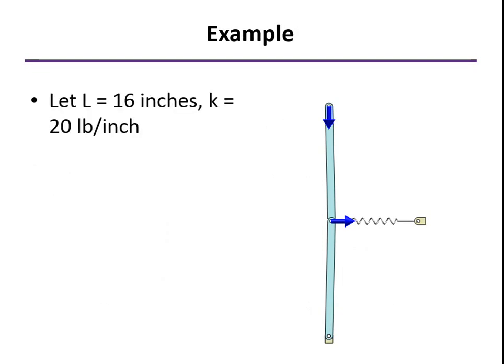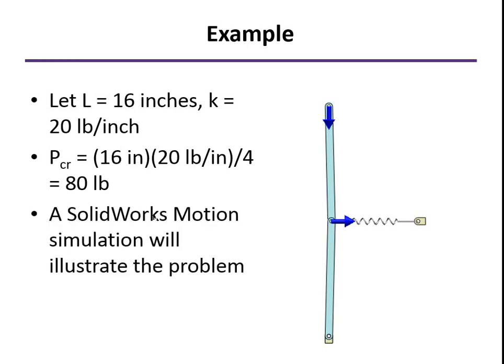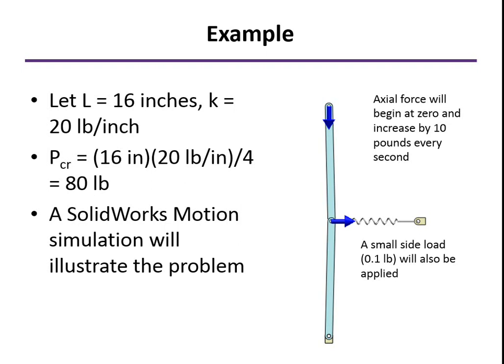Now, let's put some numbers on this. We'll let L equals 16 inches and K equals 20 pounds per inch for the spring constant. Quick calculation gives us P critical of 80 pounds. Now, we're going to do a SOLIDWORKS motion simulation to see if we can see what that load actually means. In this simulation, we're going to let the axial force start at zero and increase by 10 pounds every second. We've set this up to be a 10-second simulation going from zero to 100 pounds with this axial force. At the same time, I'm going to put a very small side load, only a tenth of a pound, a negligible load, but enough to cause a disturbance. If we don't put that on at all, because everything's in perfect alignment, we could put the axial force on there and we would never see it go out of equilibrium. But a very small side load, we'll see what the effect is on that.